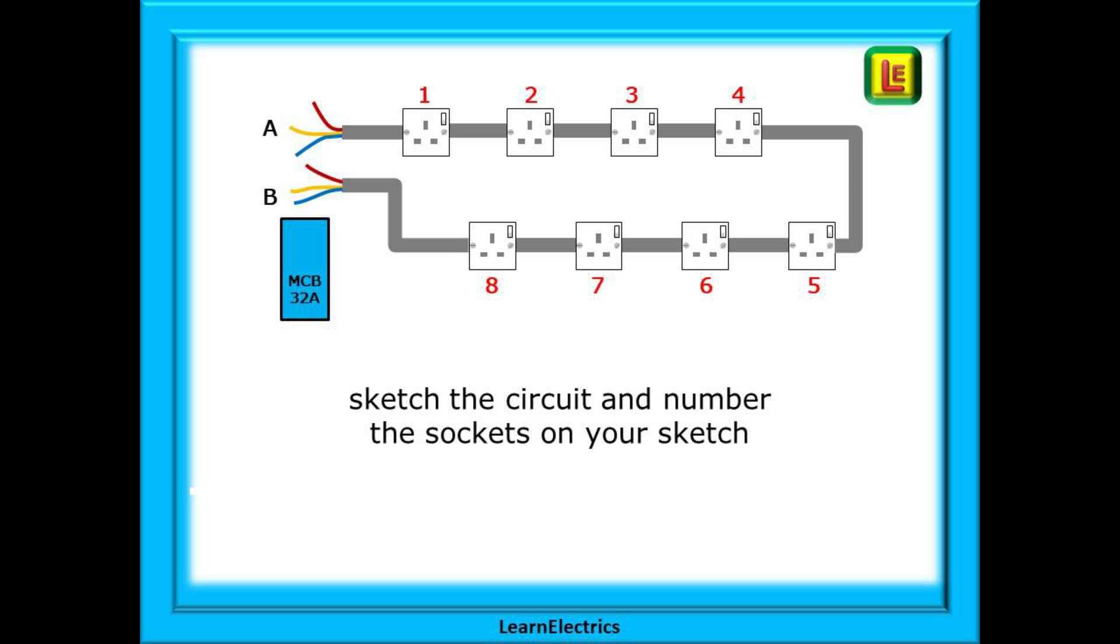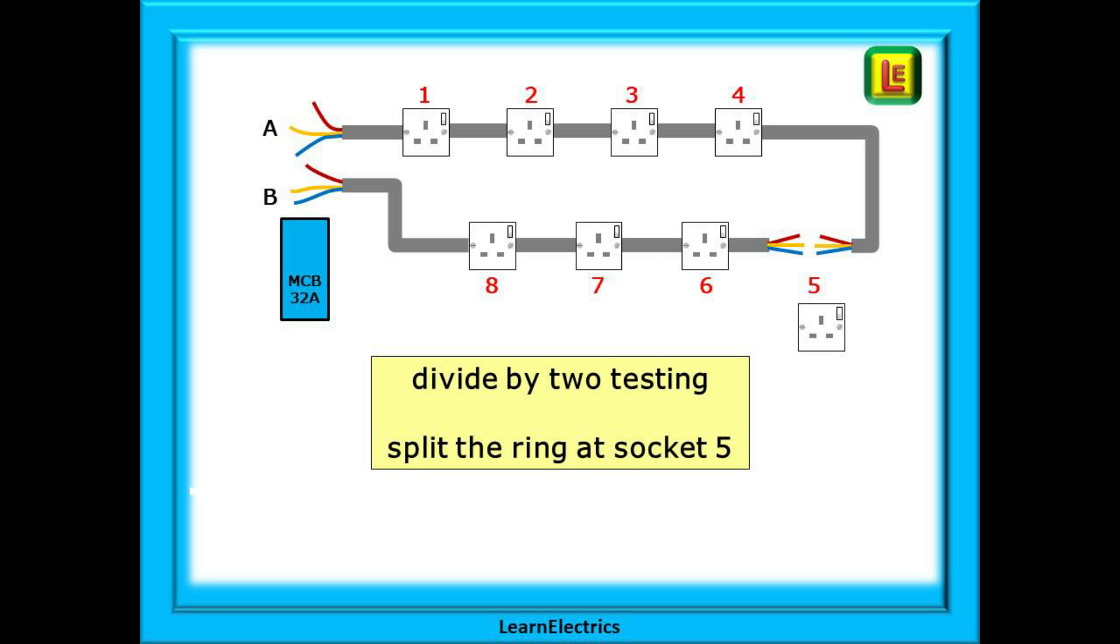Start by sketching the sockets and numbering them one to eight in this case. This helps you to keep track of what you've tested and what the results were. If you write it down, you don't need to remember it. We're going to do what's called divide by two testing. We will keep chopping the circuit in half until we find the problem. It is an established and proven method of getting to the fault quickly and easily. So begin by removing socket number five. We now have two legs: socket five to cable A and socket five to cable B. The fault has to be in one of these two legs.